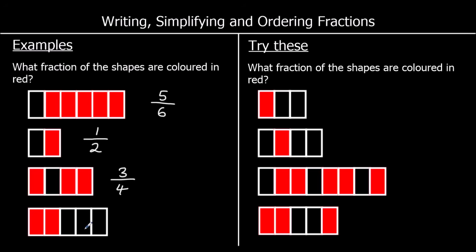And the fourth one, there are five parts. Two are coloured in red. So two out of five are red, and that is two over five or two fifths.